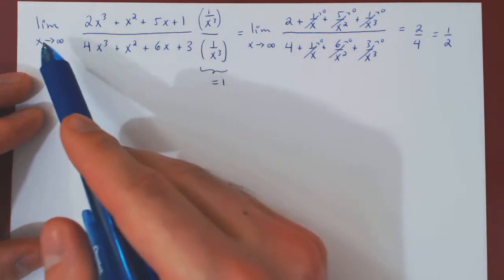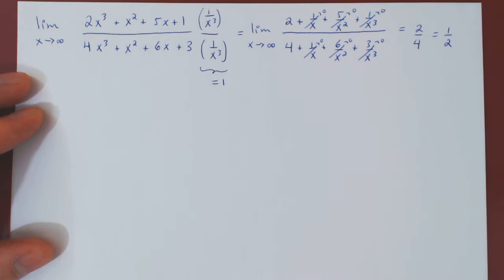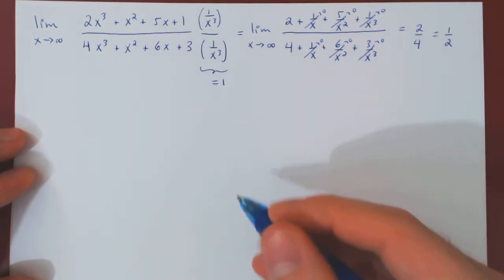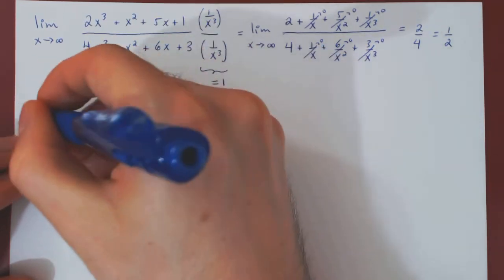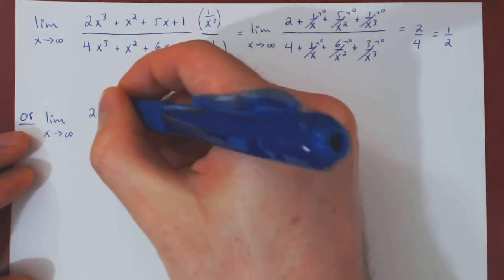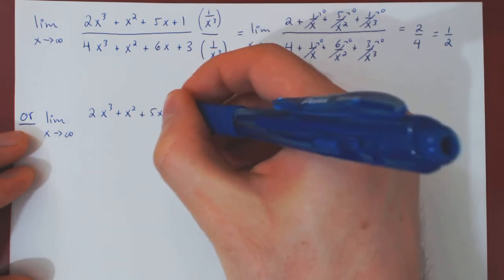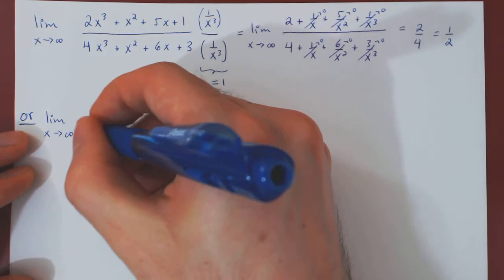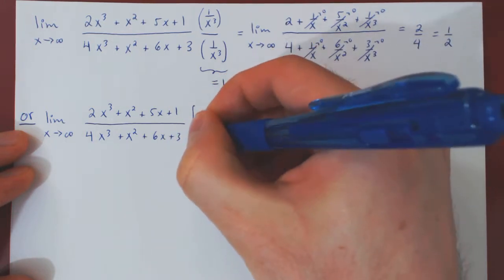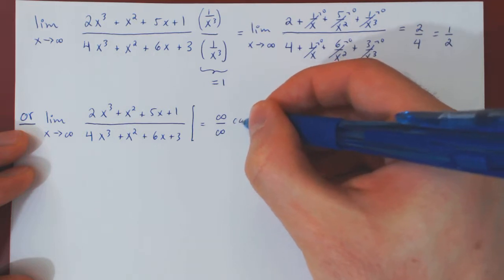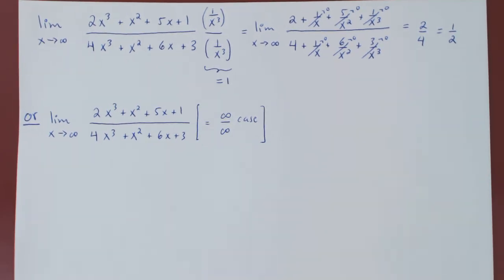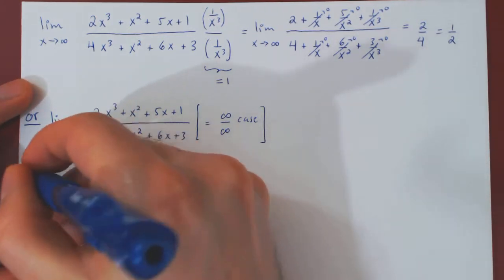Well, as we've just said, as x tends to infinity, we do have an infinity over infinity case. Well, let's see what would happen if instead of using this elementary solution, we try to apply L'Hôpital's rule. So we have an infinity over infinity case, we can apply L'Hôpital's rule.